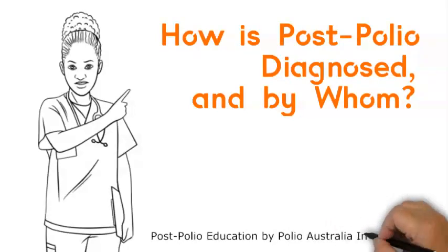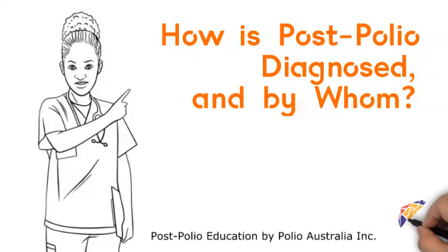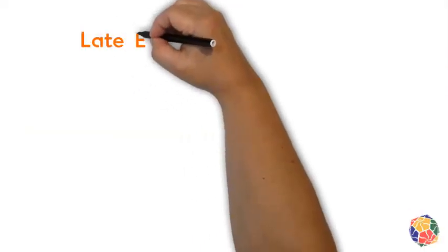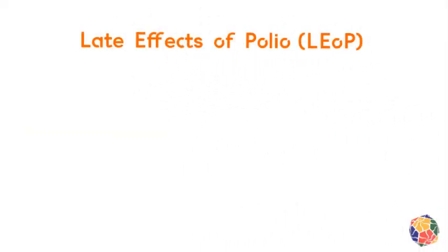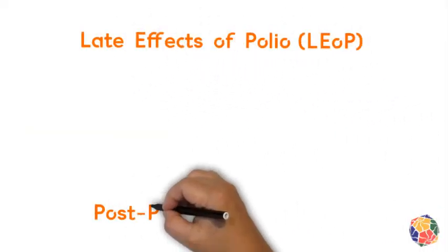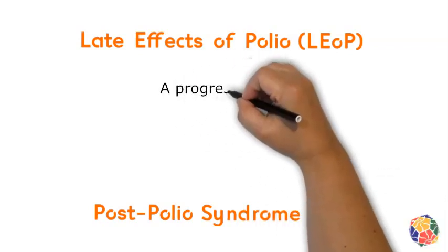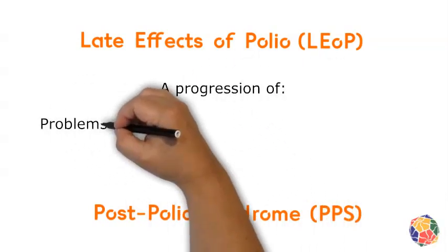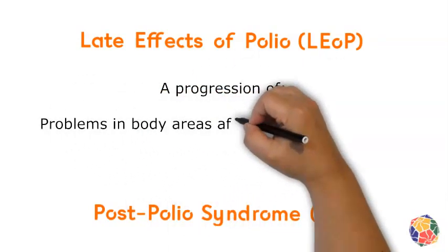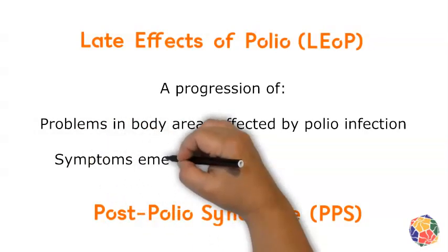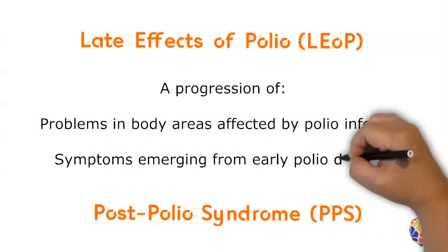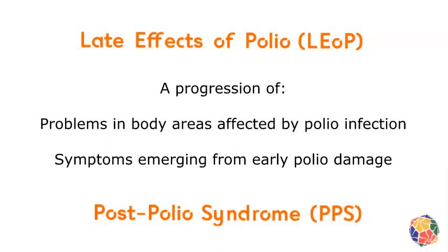How is post polio diagnosed and by who? The two post polio conditions are late effects of polio and post polio syndrome. They appear as a gradual progression of problems in areas affected by the polio virus, or as symptoms emerging from that early damage.